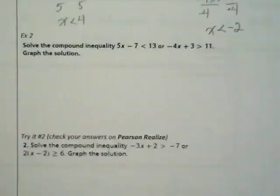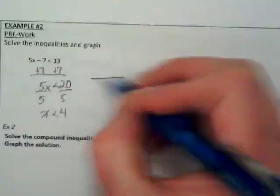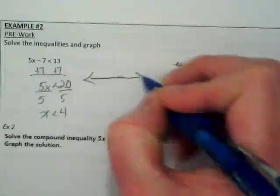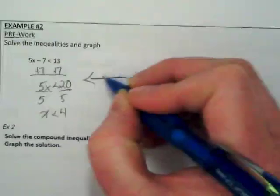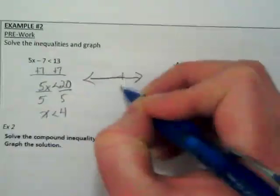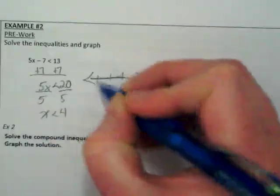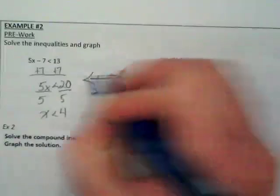So let's go to examples. Oops, I didn't graph these, did I? This is going to be x is less than 4, so I just want to put 4, 3, 2. Circle it, and it goes to the left.